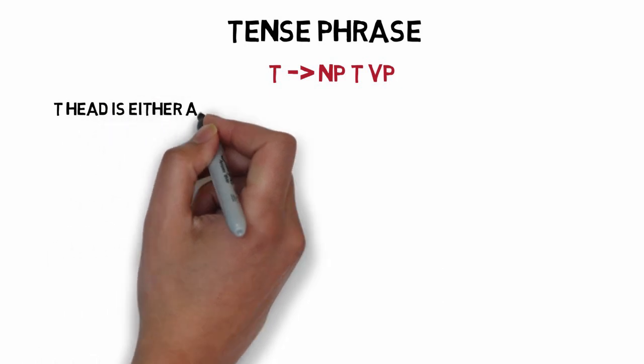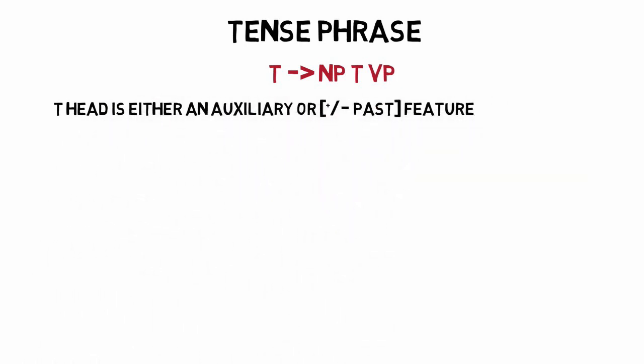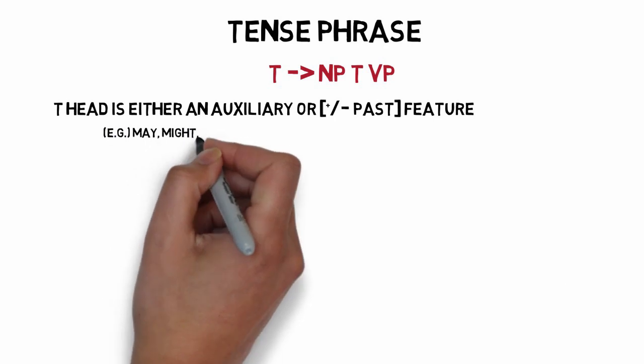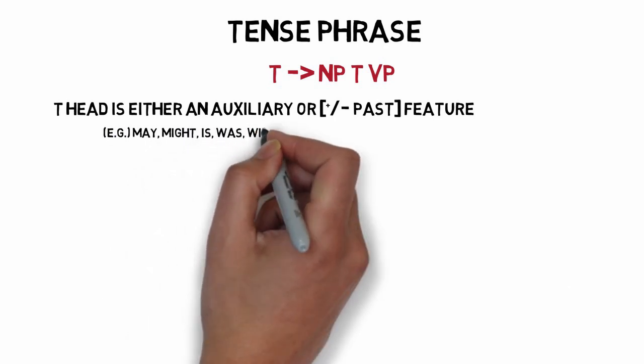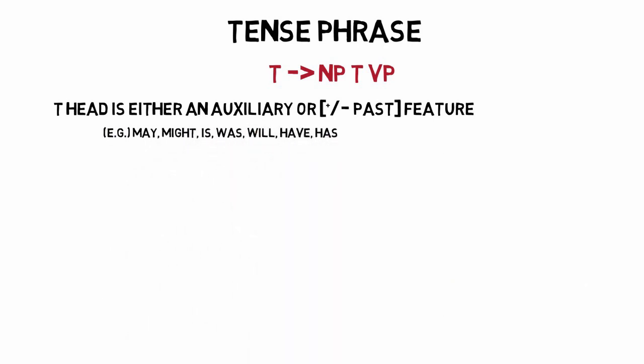The head of a tense phrase is the T. It is often an auxiliary: may, might, will, or would. Or it can be a special semantic unit that is not realized in speech or writing that is simply plus or minus past, at least in English. The TP rule generates all possible sentences in English. Let's just look at a few examples.